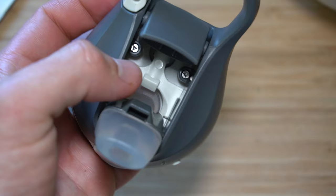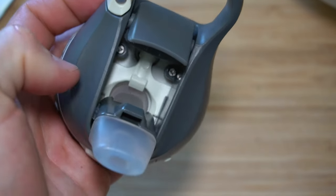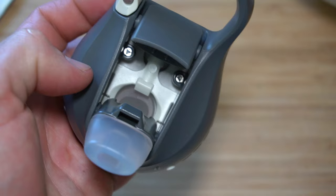Then if we pop up the lid inside here, you can see those two triangle screws. The first thing we want to do is undo those screws.